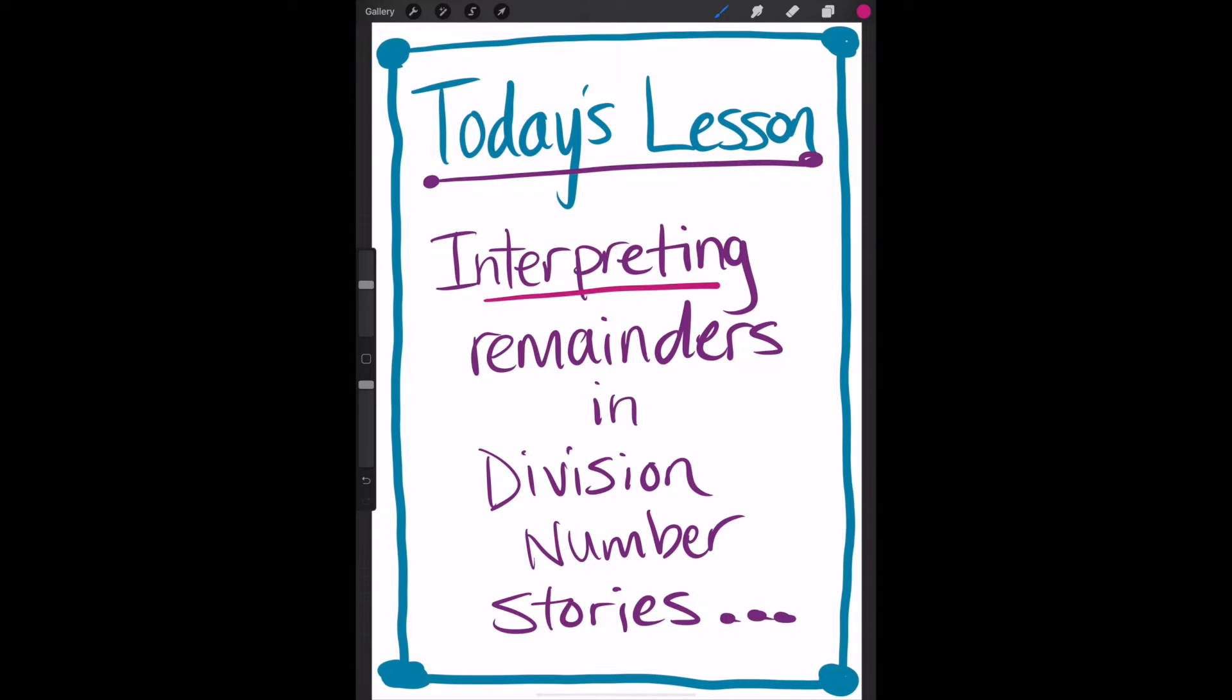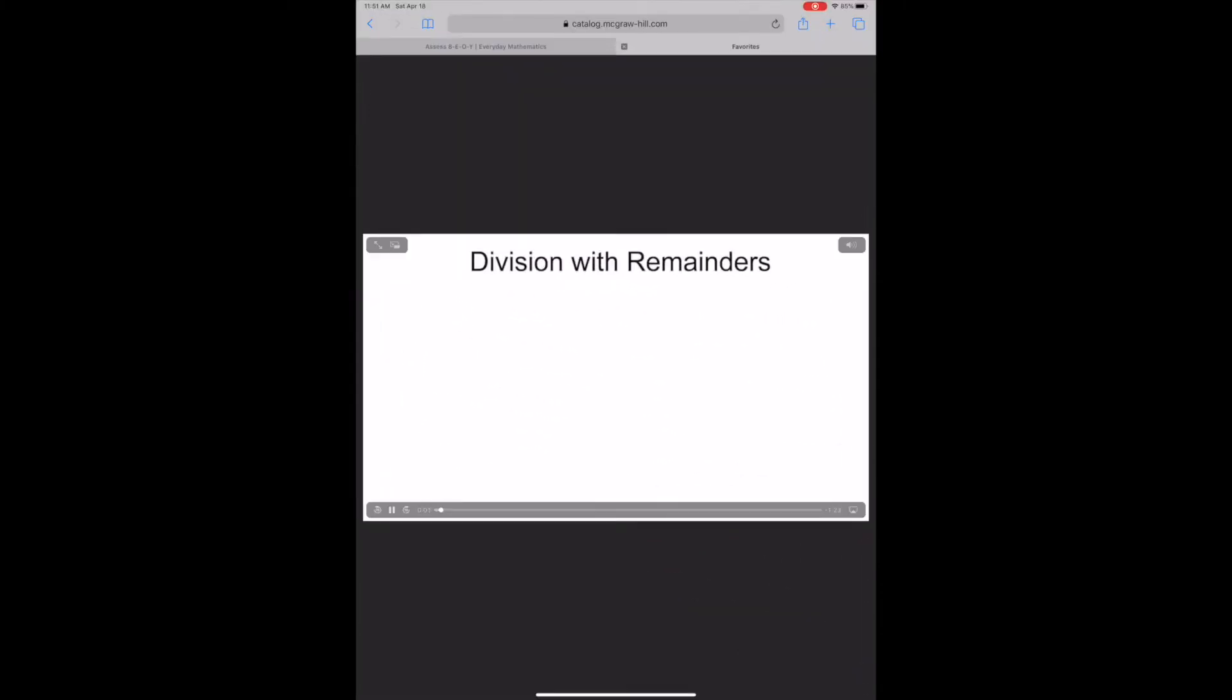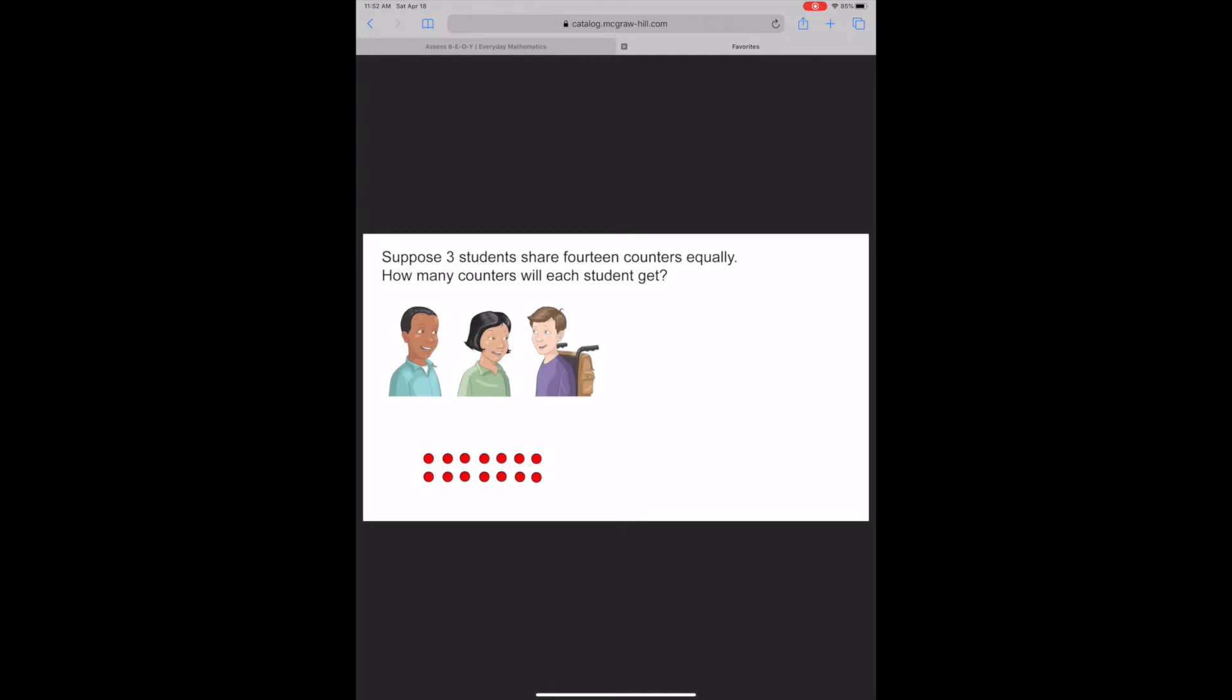Check out these two examples of division number stories with remainders. Division with remainders. Think about this problem. Suppose three students share 14 counters equally. How many counters will each student get? You can pass out the counters one by one. You can see that each student gets four counters. Since two counters can't be broken into smaller parts to share, there are two counters left over. This is the remainder.